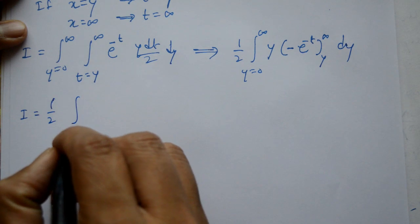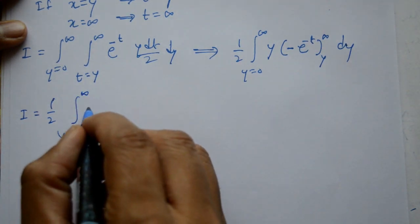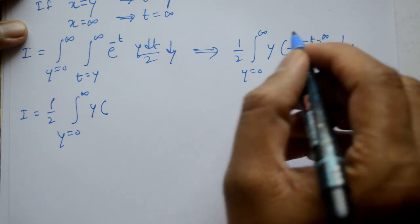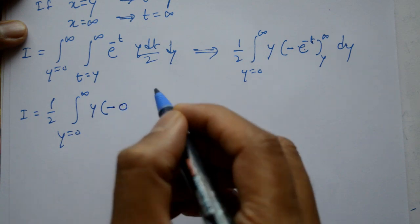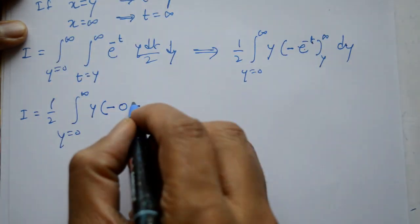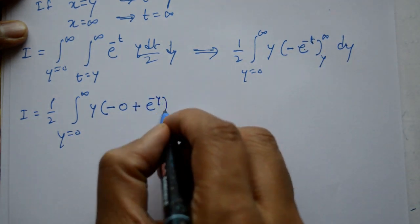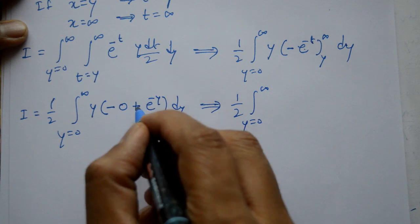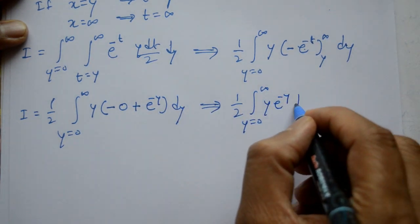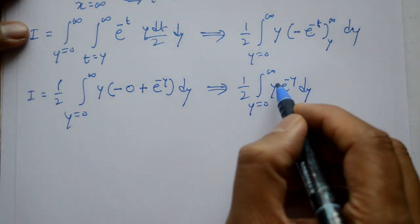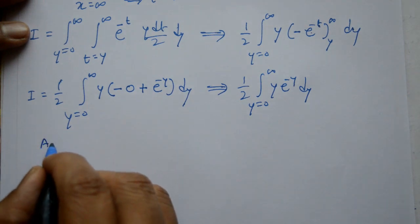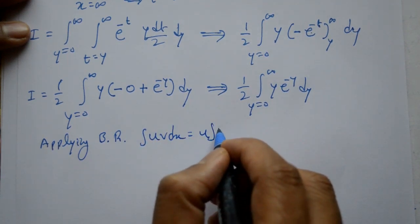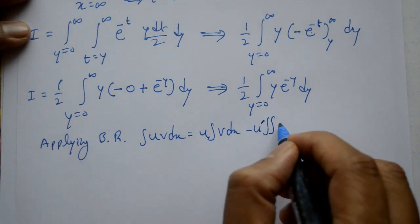So one by two, integration of y = 0 to infinity. Idar minus hai. Upper limit t = infinity, e raised to minus infinity = 0. Minus lower limit t = y, so e raised to minus y. Simplify karne par: one by two, integration of y = 0 to infinity, y into e raised to minus y, dy. Yahan product of polynomial and exponential hai, so apply karna hai Bernoulli rule.